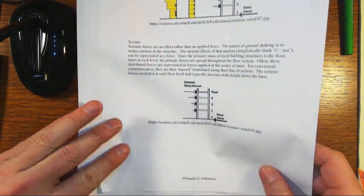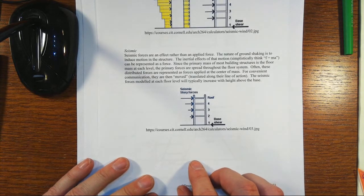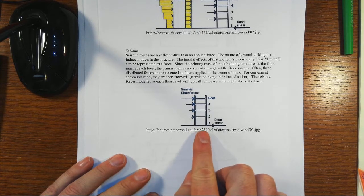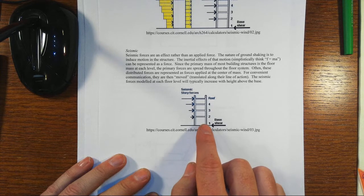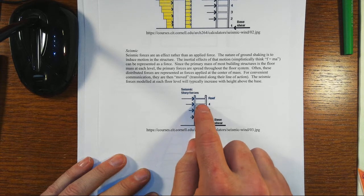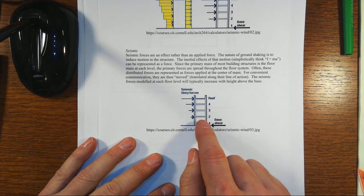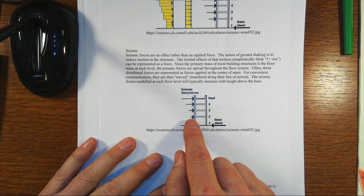That's somewhat similar to what happens with earthquakes. In earthquakes, it's not so much an applied force as it is ground shaking back and forth that creates accelerations, and those accelerations become inertial forces. Since the mass is predominantly located at the floor levels, we can consider those seismic story forces as concentrated forces.